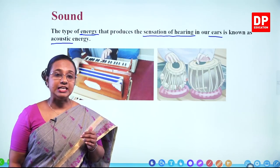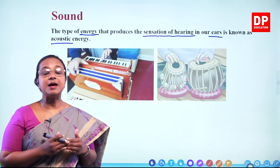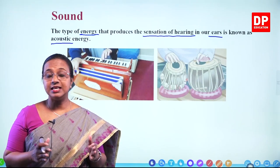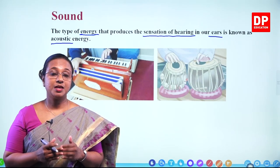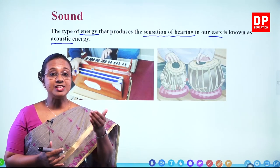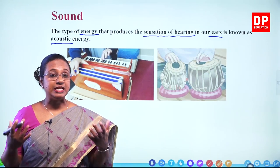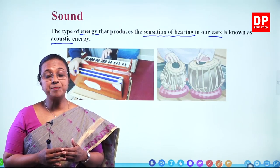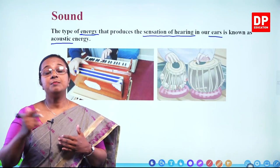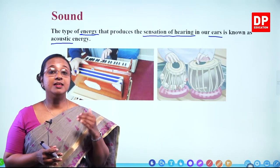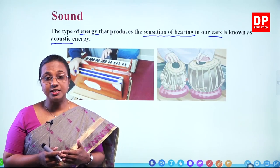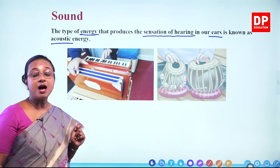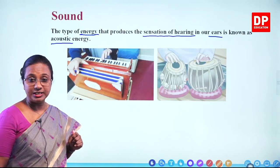Before going into detail, let me summarize what we have already discussed. We started off the lesson by discussing the two main types of waves: mechanical waves and electromagnetic waves. Mechanical waves need a medium for propagation; electromagnetic waves do not. Under mechanical waves, we looked at transverse waves and longitudinal waves. As an example for longitudinal waves, sound waves are a type of longitudinal waves.